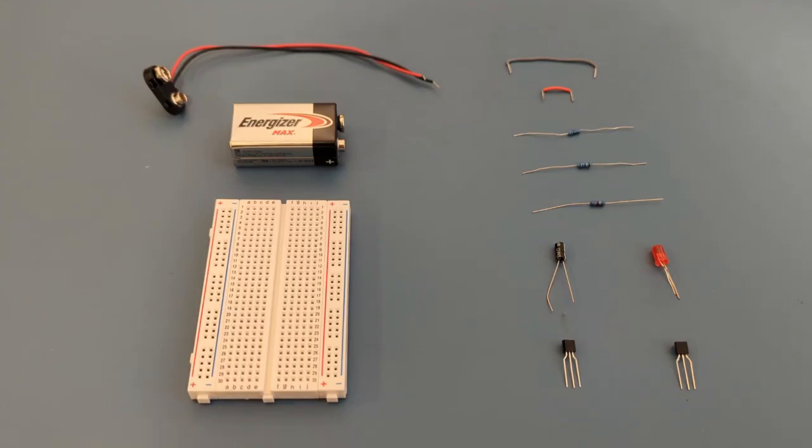Here are all the components you need to set up this circuit: two jumper wires, a 1 kilohm resistor, a 1 megaohm resistor, a 22 ohm resistor, one 2.2 microfarad capacitor, one LED, one BC557 transistor, one BC547 transistor, one 9-volt battery, one 9-volt battery buckle connector, and a breadboard to connect everything together.